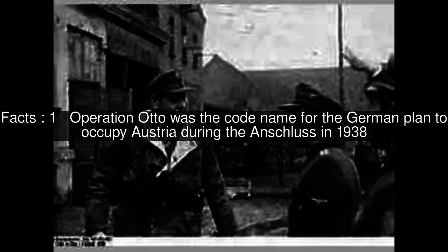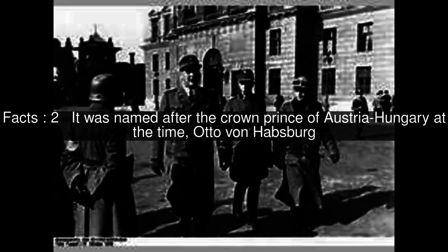Operation Otto was the code name for the German plan to occupy Austria during the Anschluss in 1938. It was named after the Crown Prince of Austria-Hungary at the time, Otto von Habsburg.